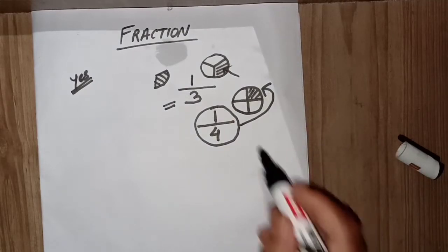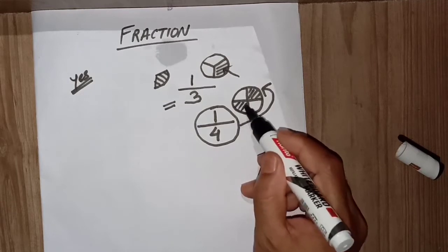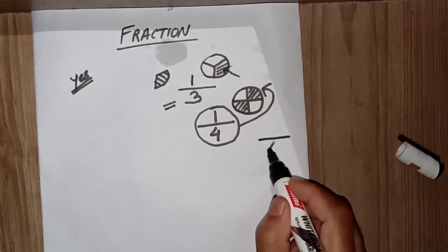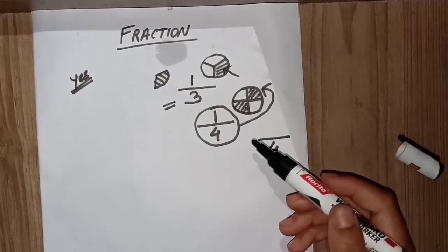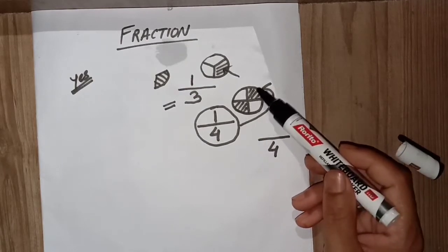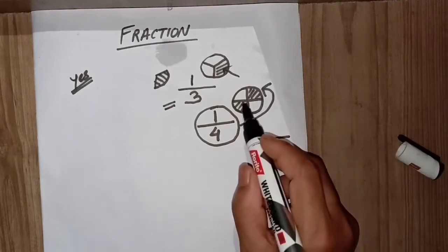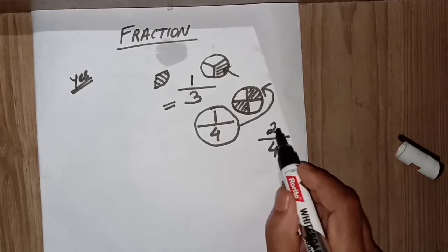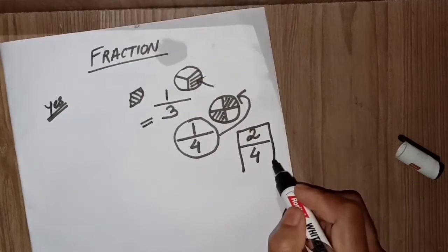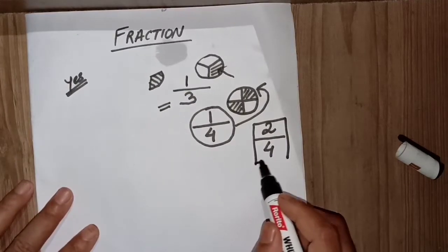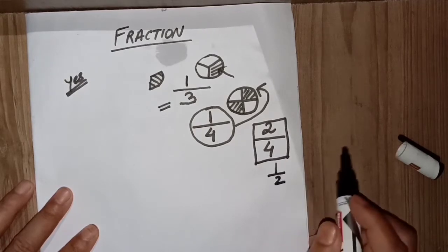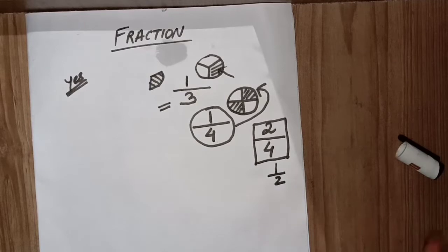Again, if I consider one more part — now in this entire circle split into four parts, two parts are shaded. If I represent these two shaded parts as a fraction, it is the number of shaded parts divided by total number of parts, which is two by four. If you want to reduce it, it will be one by two.